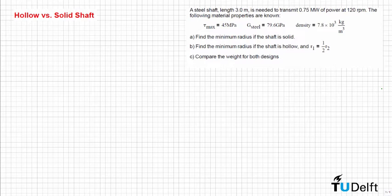In the first case, we have to find what is the minimum radius of this shaft if it is solid. In the second case, we have to find the minimum radius if the shaft is hollow and we have the relationship that R1 should be equal to R2 divided by 2. And finally, we have to compare the weight for both designs, so we have to decide which one is better.